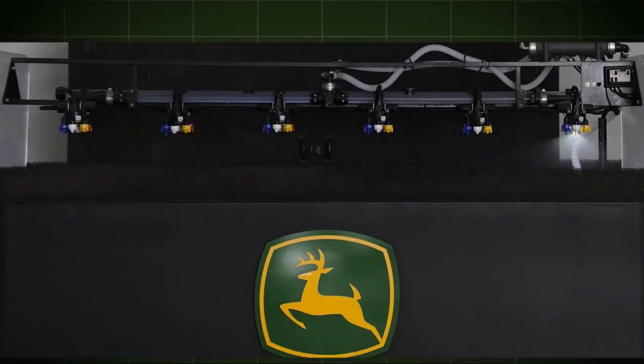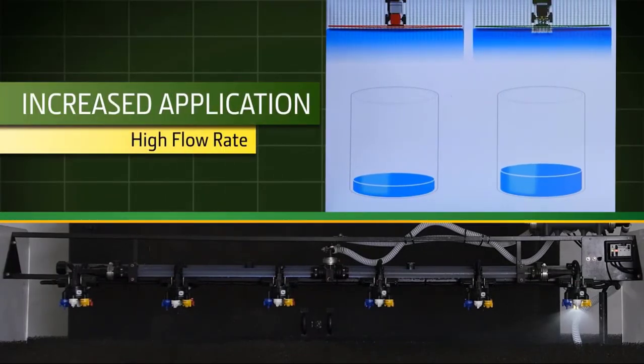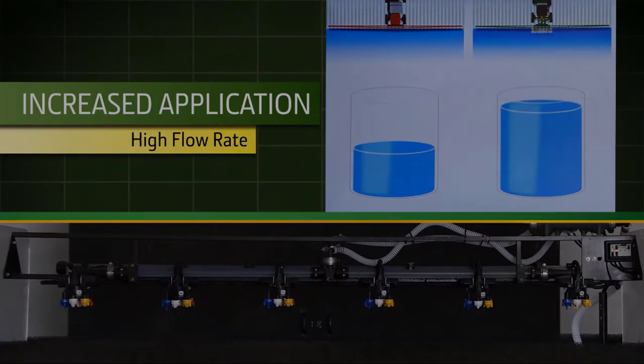The next example is that high rate flow, which is another industry exclusive. As you can see, we fill the container much faster than the competition. We can apply up to 50 gallons per acre at a ground speed of 15 miles per hour. For our competition to meet that same rate, they'd have to be going around 9 miles per hour.